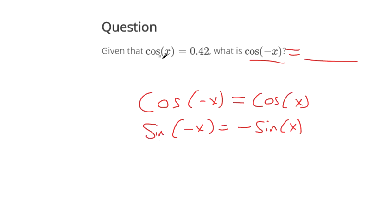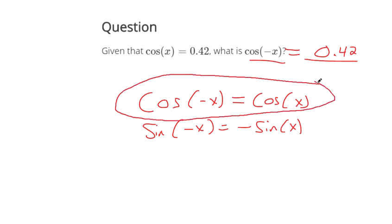Okay, so cosine. If cosine of x equals 0.42, then cosine of negative x, it's the same thing. We don't have to attach a negative sign because it's even. Now, because of this right here.